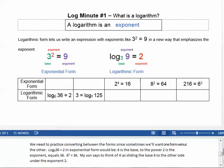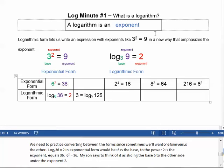We need to practice converting between these forms, since sometimes we'll want one form versus the other. Log base 6 of 36 equals 2 in exponential form would be 6 is the base to the power 2 is the exponent equals 36. My son says, think of it as sliding the base 6 to the other side under the exponent 2. So, 6 squared equals 36.